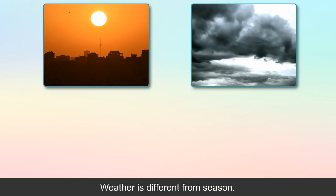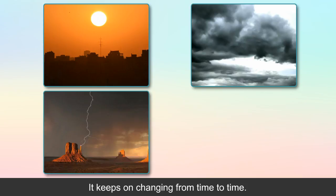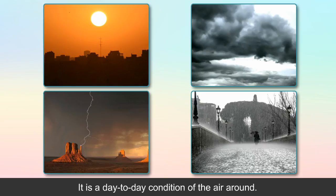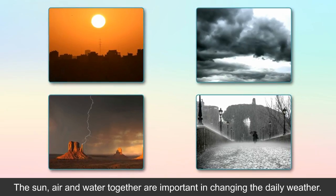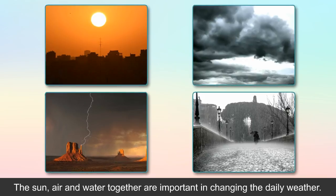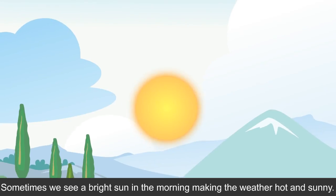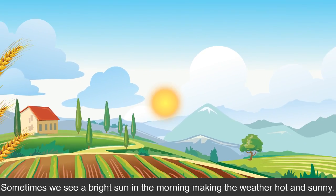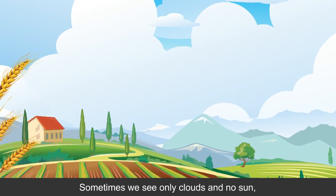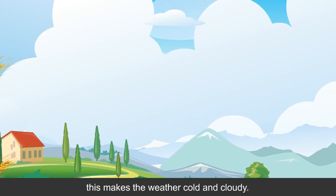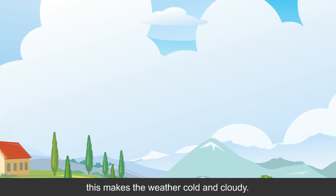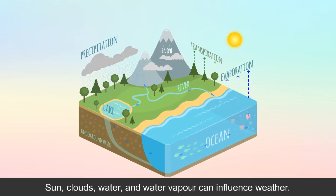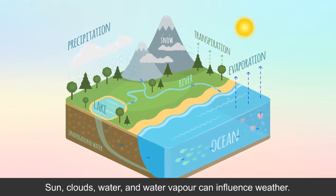Weather is different from season. It keeps on changing from time to time. It is the day-to-day condition of the air around us. The sun, air and water together are important in changing the daily weather. Sometimes we see a bright sun in the morning, making the weather hot and sunny. Sometimes we see only clouds and no sun, which makes the weather cold and cloudy.